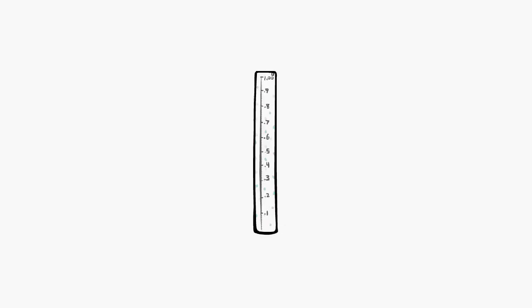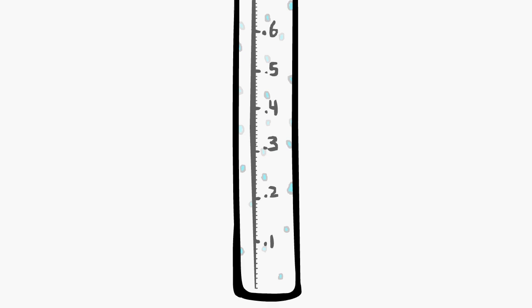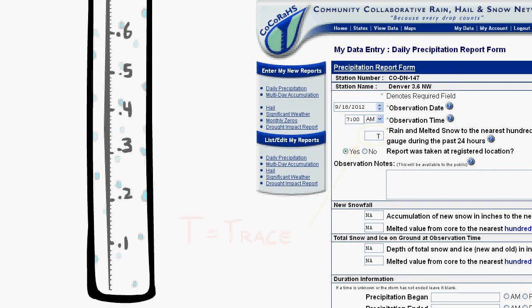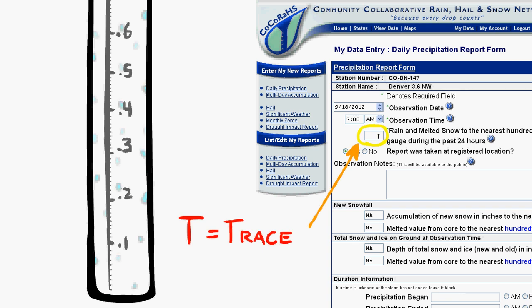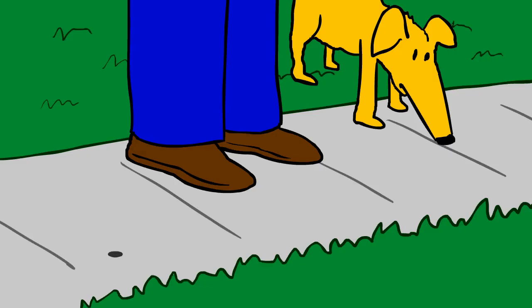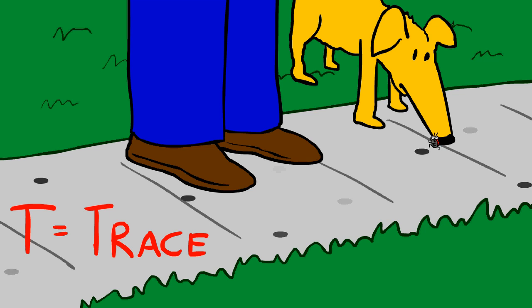Sometimes you will find that your gauge has a little bit of moisture inside, but not enough to measure up to one one-hundredth of an inch. In this case, you would report T for trace. In fact, you may witness rain or snow, but not enough to measure. Here again, report a T even if nothing landed in your gauge.